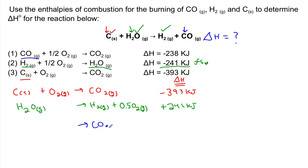So flipping equation number one, I'm going to get carbon monoxide produced, half a unit of oxygen gas produced, and my reactant is going to be carbon dioxide gas. I did flip this first equation, so the change in enthalpy is going to be positive 238 kilojoules.